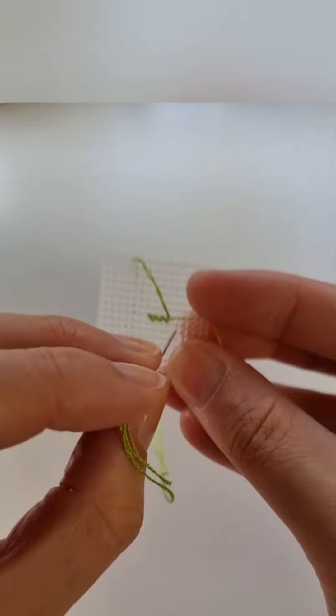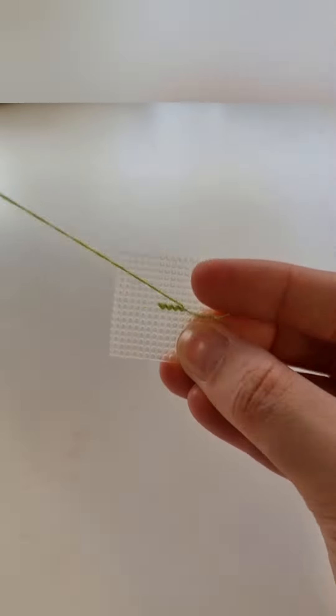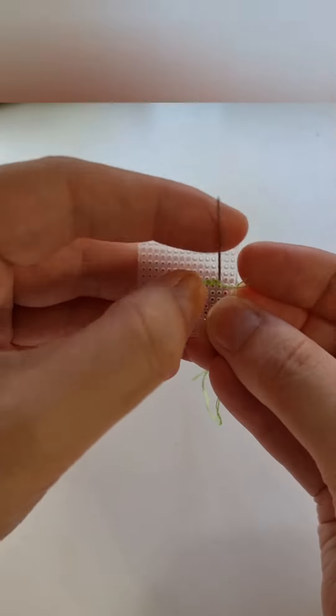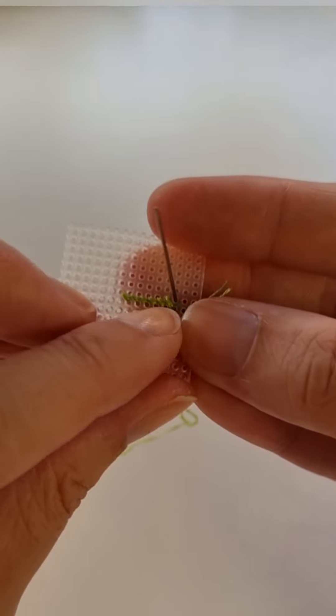I'll keep going with my row of half stitches all the way until I get to the end of the pattern for the green. Now that I've come to the end of my row of green I'm going to come back and cross my stitches.